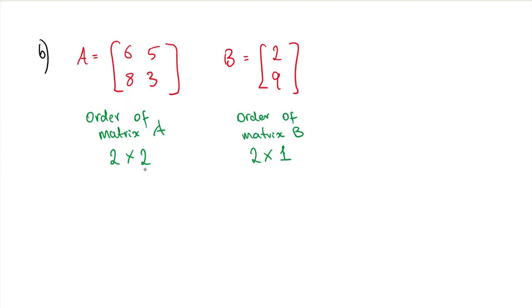For this matrix to exist, it has to have the same number of columns in matrix A and the same number of rows in matrix B. So the product matrix AB exists.